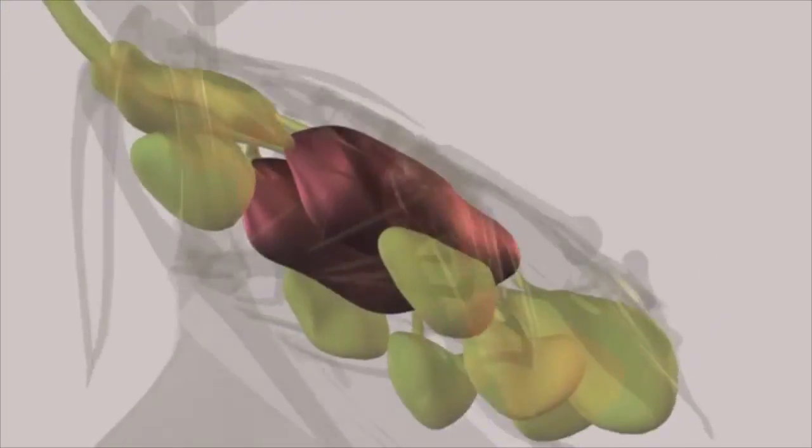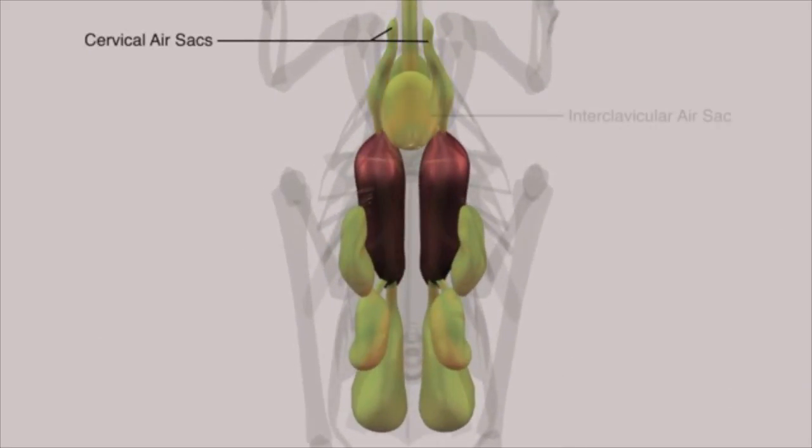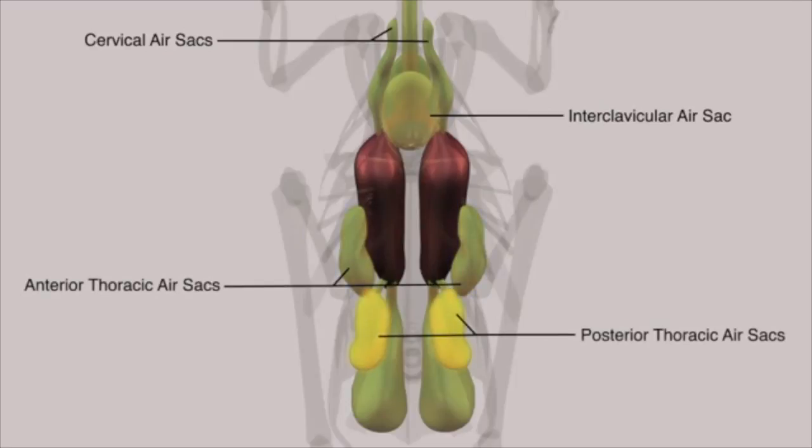These air sacs include a pair of cervical sacs, a single interclavicular sac, a pair of anterior thoracic sacs, a pair of posterior thoracic sacs, and a pair of large abdominal sacs.